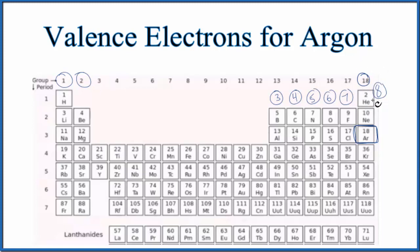Elements in group 18, with the exception of helium—helium only has two valence electrons—but all these elements here have eight valence electrons. So looking at the periodic table, based on the group, argon has eight valence electrons.